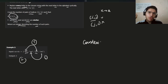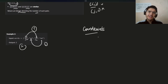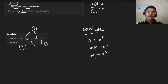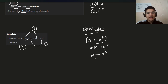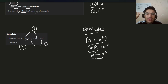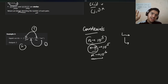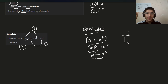Looking at the constraints: n is up to 10^5, n times m is up to 10^5, and m alone can go up to 10^5. This means we can iterate over all strings and over each character — that is the significance of n*m being 10^5. This gives a hint about the expected time complexity.